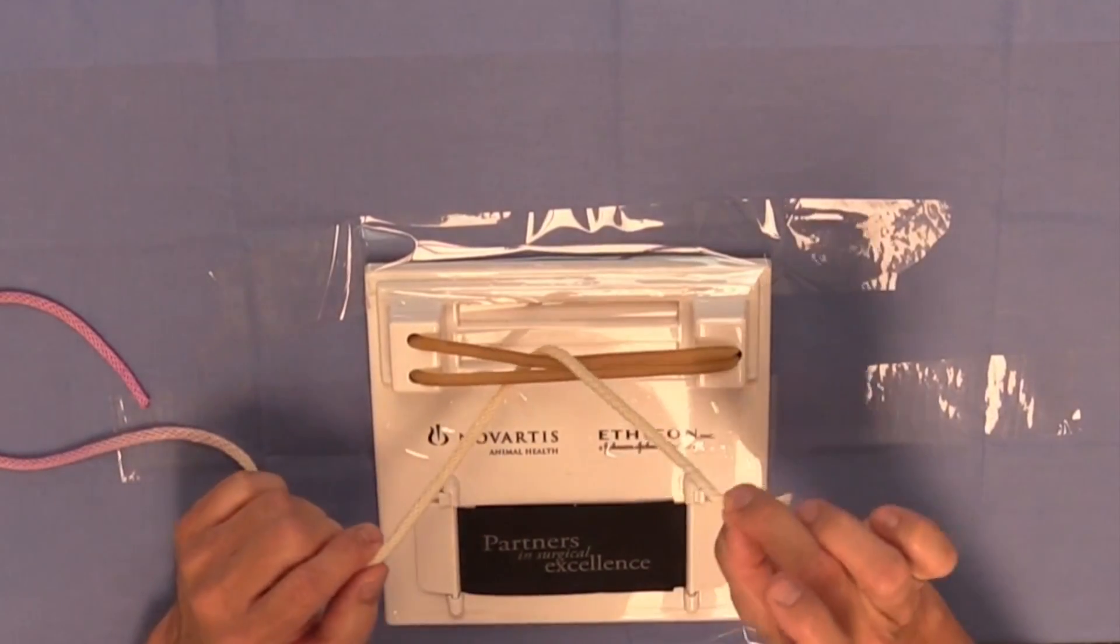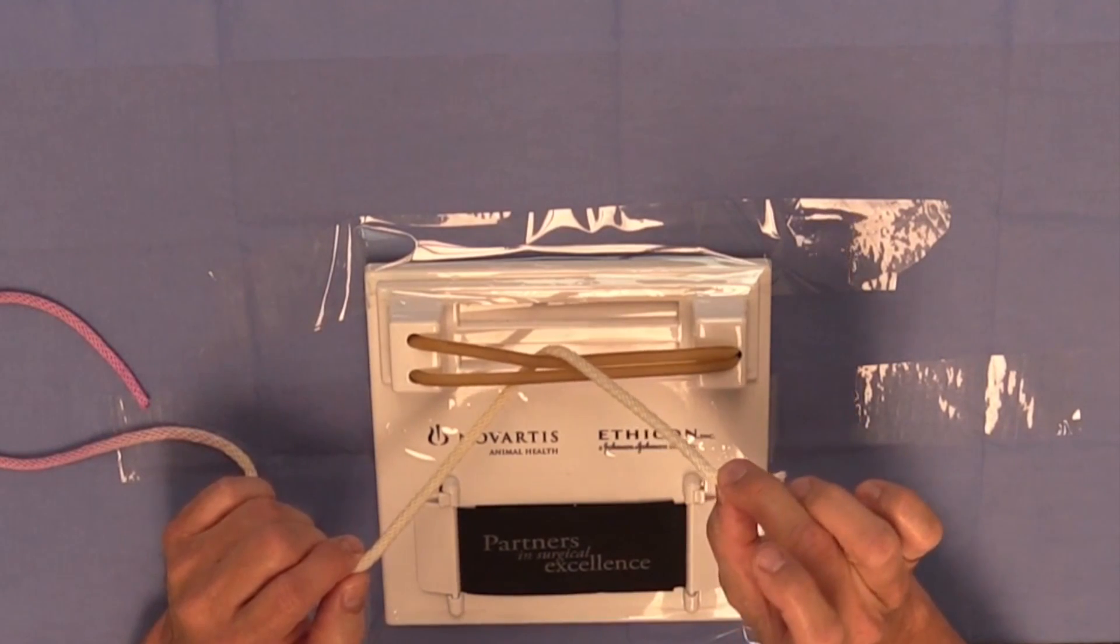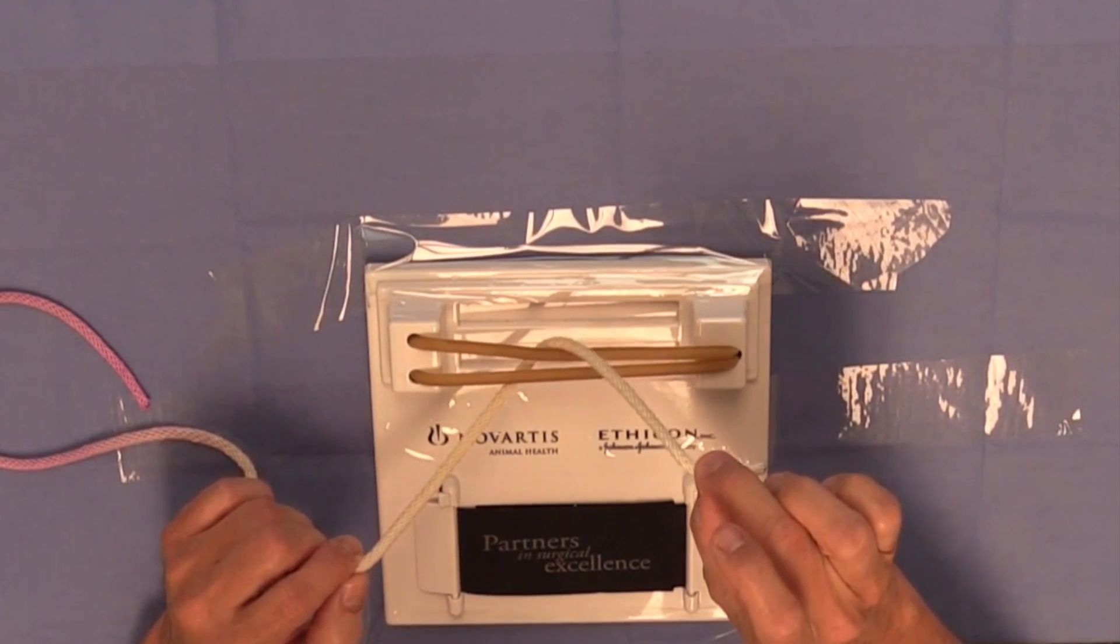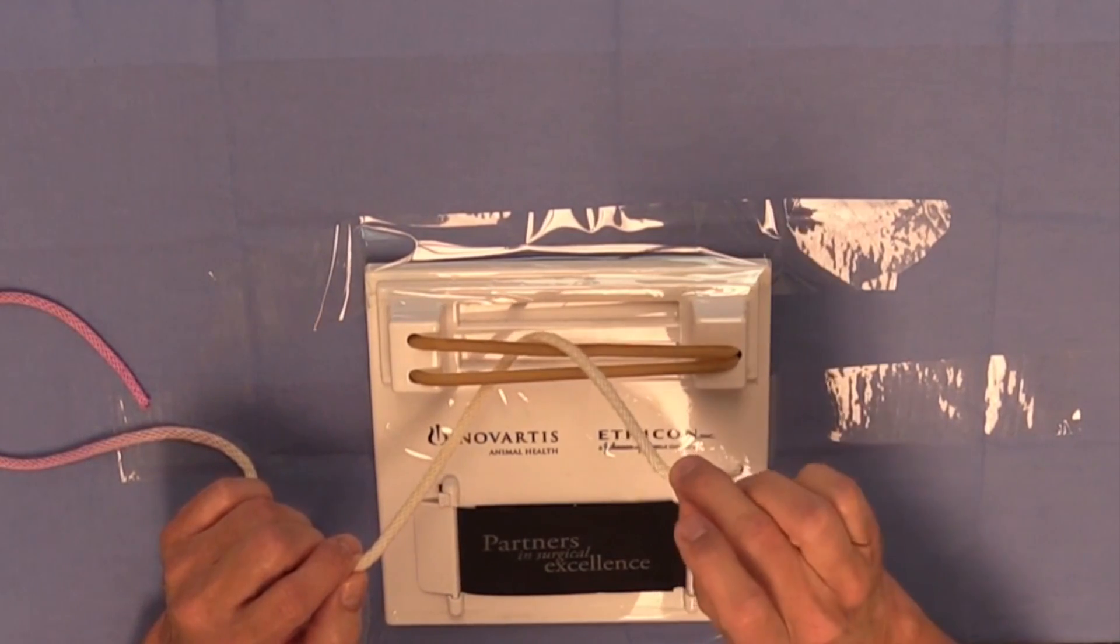Now, I have the short end of the suture material between my thumb and middle finger in my right hand, so I'm going to construct this knot using a one-hand technique, leading or using my right hand.